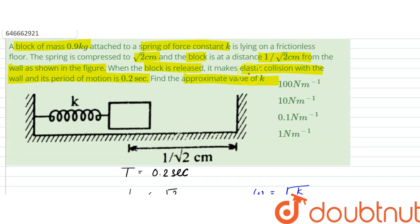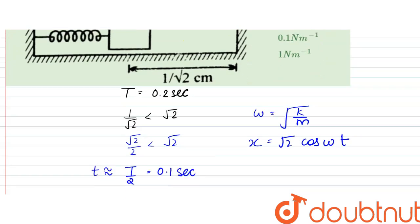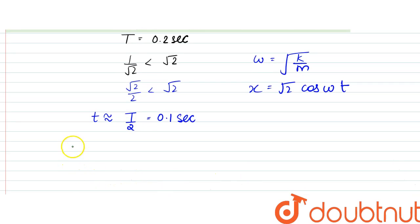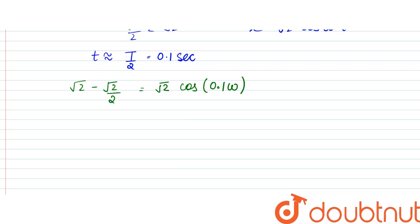So after maximum compression until the mass collides with the wall, it is given by root 2 minus root 2 by 2 would be equal to root 2 cos 0.1 omega.